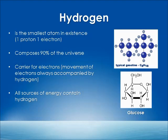It was the first element to ever exist, and it's the basis of all other elements — all other elements came from hydrogen. It composes 90% of the universe, so it's very present and available throughout the universe. One of the most important aspects of hydrogen is that it is a carrier of electrons. It transports energy, so all sources of energy contain hydrogen. The Sun is a great ball of energy that powers the earth, and it is composed of 90% hydrogen.